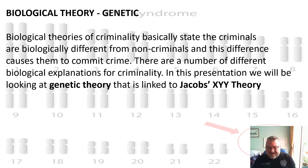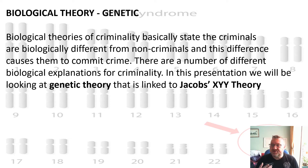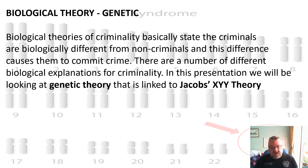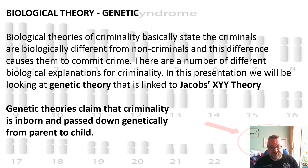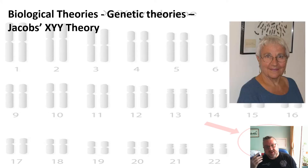As I've stated in my previous PowerPoints, biological theories of criminality are trying to show that criminals are biologically different from non-criminals, and it's this difference that causes them to commit crime. We're going to look at a genetic theory linked to Jacobs's XYY theory. Genetic theories claim that criminality is inborn — it's passed down genetically from parent to child through the genes.